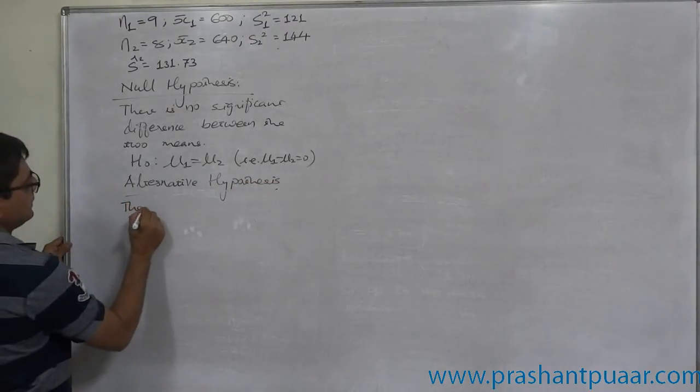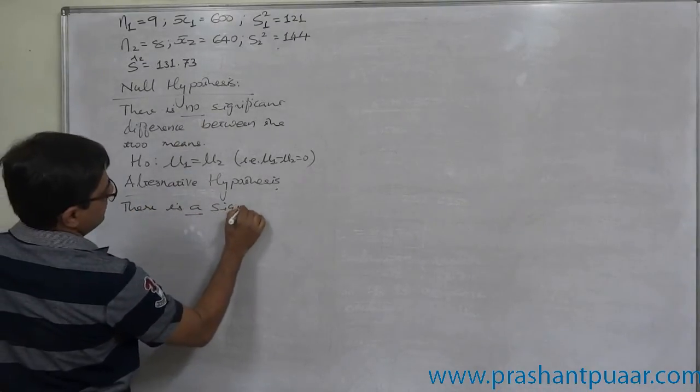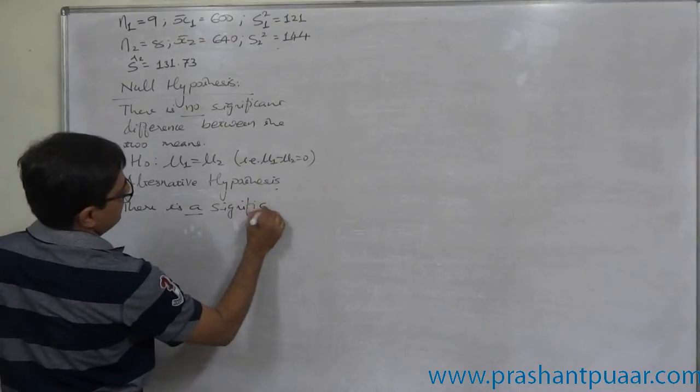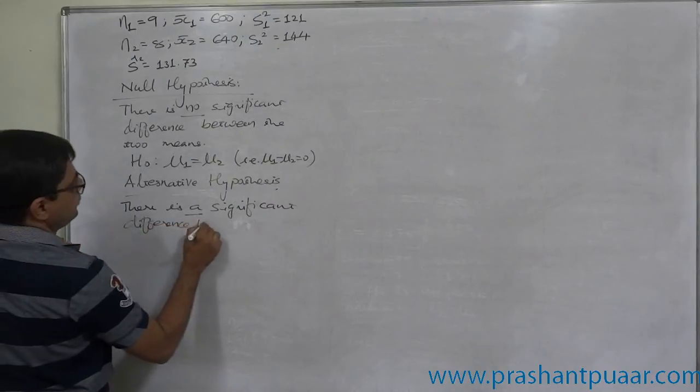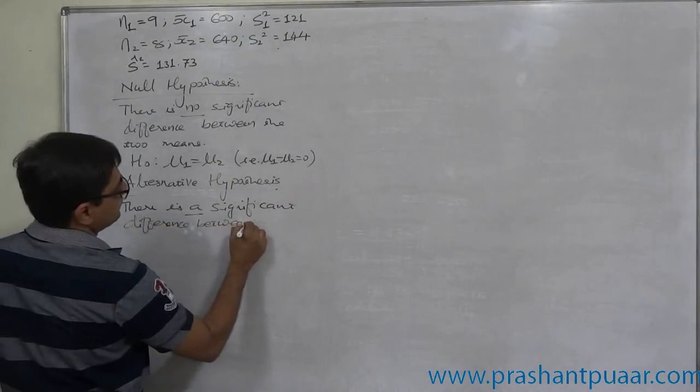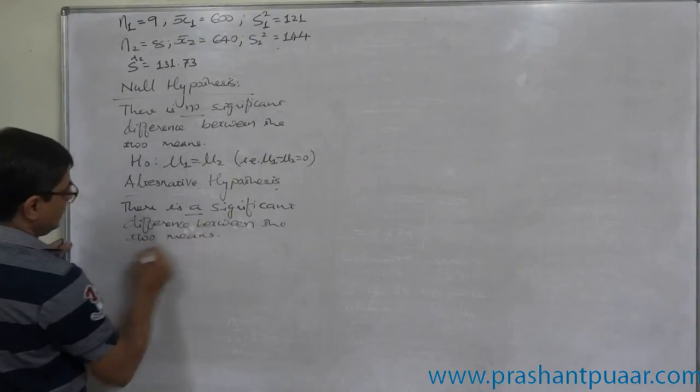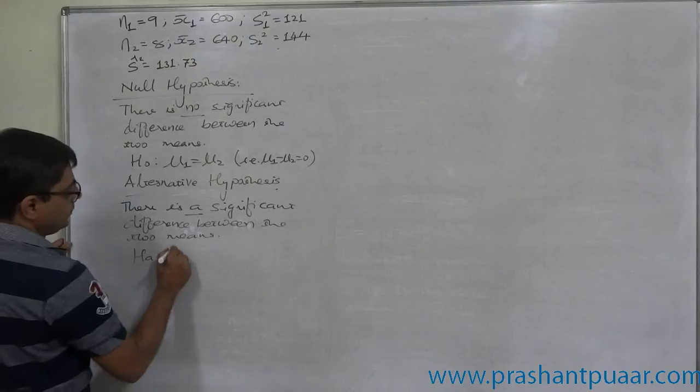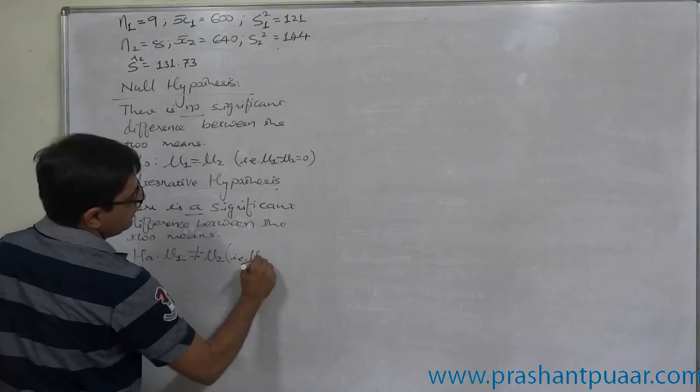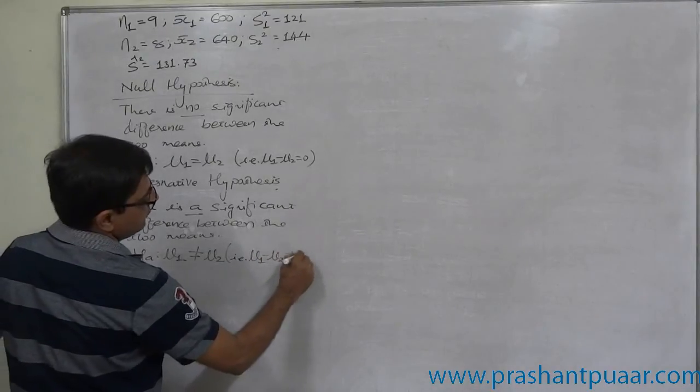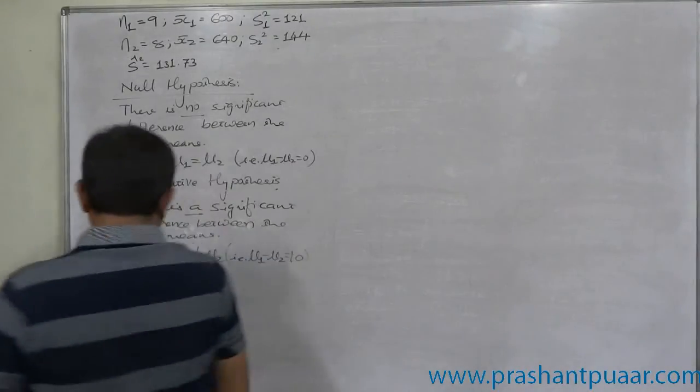Alternative hypothesis: There is a significant difference between the two means. Hₐ: μ₁ ≠ μ₂, or μ₁ - μ₂ ≠ 0. So this is the case of two-tailed test.